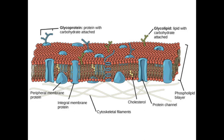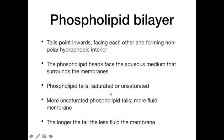Some of the phospholipid tails are saturated and some are unsaturated. The more unsaturated they are, the more fluid the membrane — meaning more movement exists in the membrane. This is because unsaturated fatty acid tails are bent due to the double bond, so they fit together more loosely. Fluidity is also affected by tail length: the longer the tail, the less fluid the membrane.